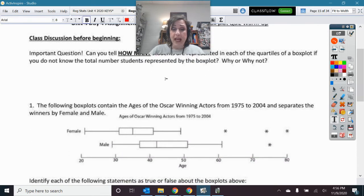For example, if I have this set, these were Oscar winners, what do I know about each one of these quartiles? I know that 25% of the females are in this quartile, and 25% of the females are represented in this quartile, and so on. We've talked about how varied, how this is a smaller quartile so it's less varied. But how many people is that? We don't know.